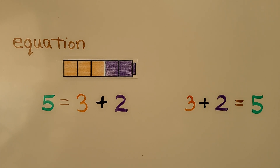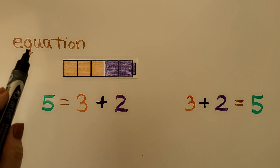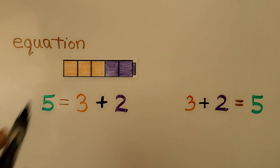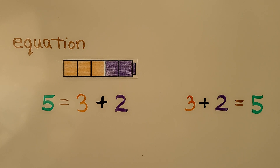A number sentence is also called an equation. An equation shows the same amount on both sides of the is-equal-to symbol. We can call number sentences, or addition sentences, equations — they are addition equations.